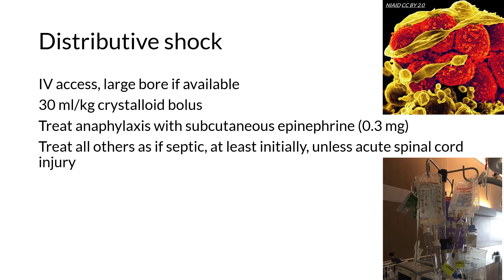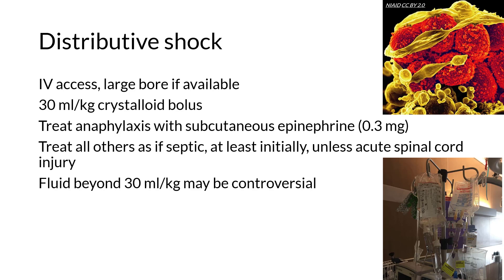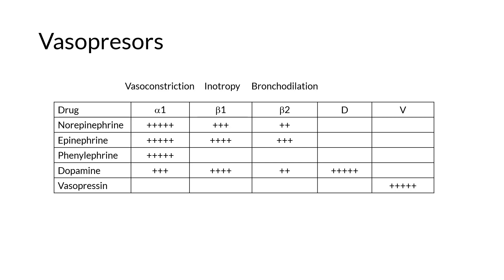In acute spinal cord injury, it's important for neurosurgery to be involved and probably just take over, as too much fluid can result in spinal cord swelling. This is probably as good a place as any to talk about vasopressors. High-level decisions need to be made with help from upper-level residents or subspecialty consultants. What you need to know is that vasopressors all cause constriction of the arteries, thus countering inappropriate vasodilation in distributive shock.